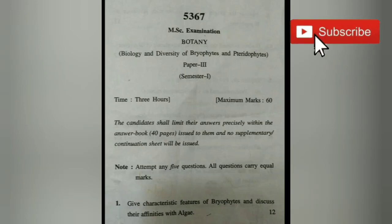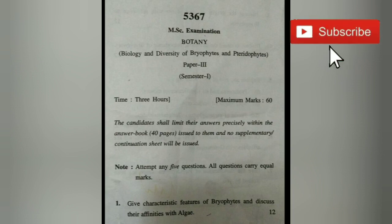Welcome to Study Sessions. Today we are going to discuss our MSc examination paper — Biology and Diversity of Bryophytes and Pteridophytes, Paper 3, Semester 1. There were 10 options and we had to attempt 5 questions. The first question was: give the characteristic features of bryophytes and discuss their affinities with algae — that is, similarities of bryophytes with algae. It was a very easy question and I think you all must have attempted it.